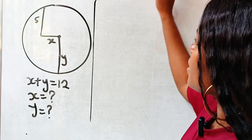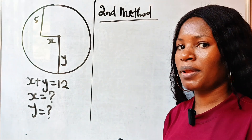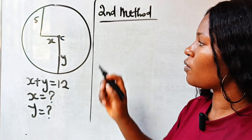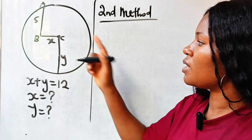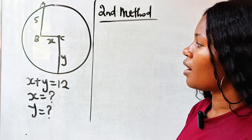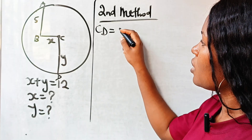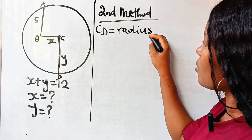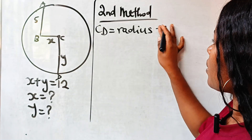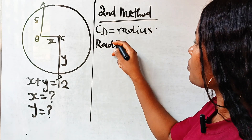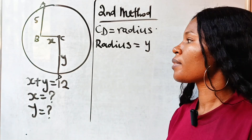Let's go. The second method is actually very easy to apply. First of all, this is the center of this circle, so let's call it C. Let's call this point A, this is point B, and let's call this D. CD is actually the radius of this circle, which is also equal to y. So the radius of the circle is equal to y.